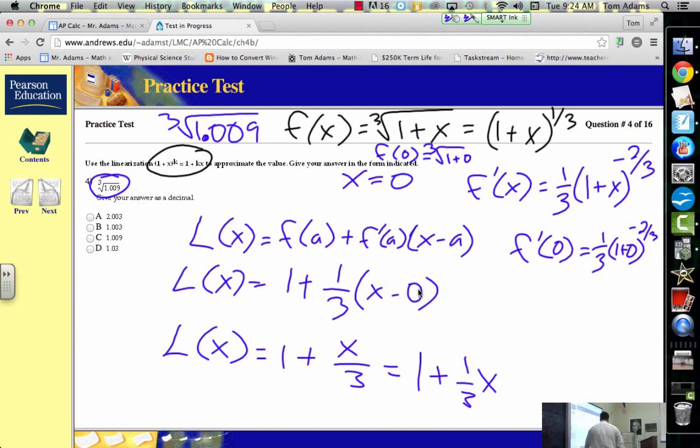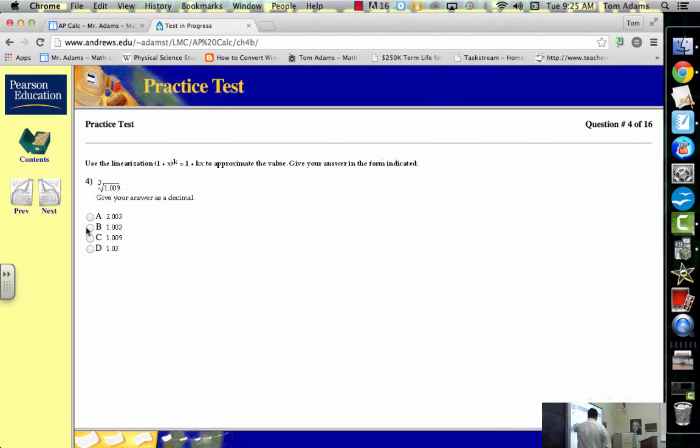So what are we interested in? Well, we want to know what the linearization of what number is. So what do I plug in here into this equation? Well, I want to know what l of 0.009 is. Well, that's going to be 1 plus 0.009 divided by 3. Well, what's that? 1.003. What do you guys think? I think it's B. Well, ding ding ding.